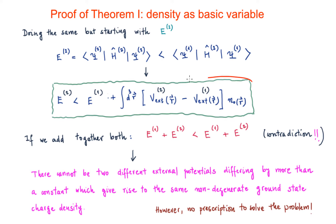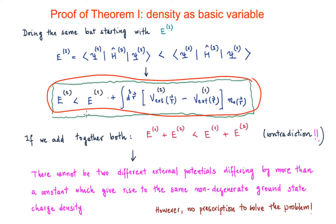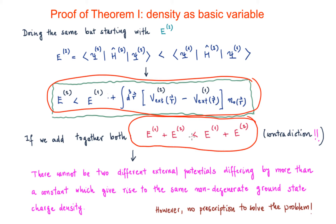Considering these two expressions and summing them together, the contributions associated with the external potentials vanish, and we get that E1 + E2 is lower than E1 + E2. That is a contradiction — it's impossible.